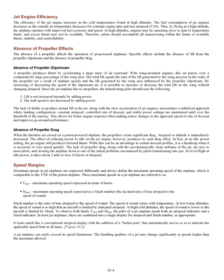Absence of propeller effects. The absence of a propeller affects jet-powered airplane operation, including the absence of lift from the propeller slipstream and the absence of propeller drag. A propeller produces thrust by accelerating a large mass of air rearward. With wing-mounted engines, this air passes over a large percentage of wing area. Total lift is the sum of lift from the wing area outside the propeller wake and lift generated by the wing area influenced by the propeller slipstream. By changing slipstream speed, it is possible to increase or decrease total lift without changing airspeed.